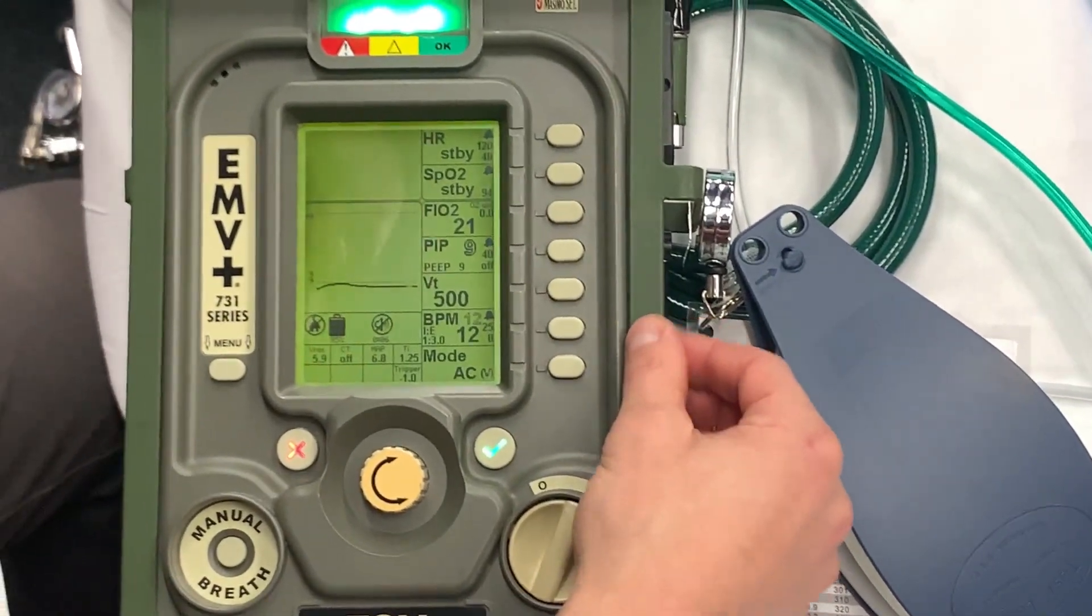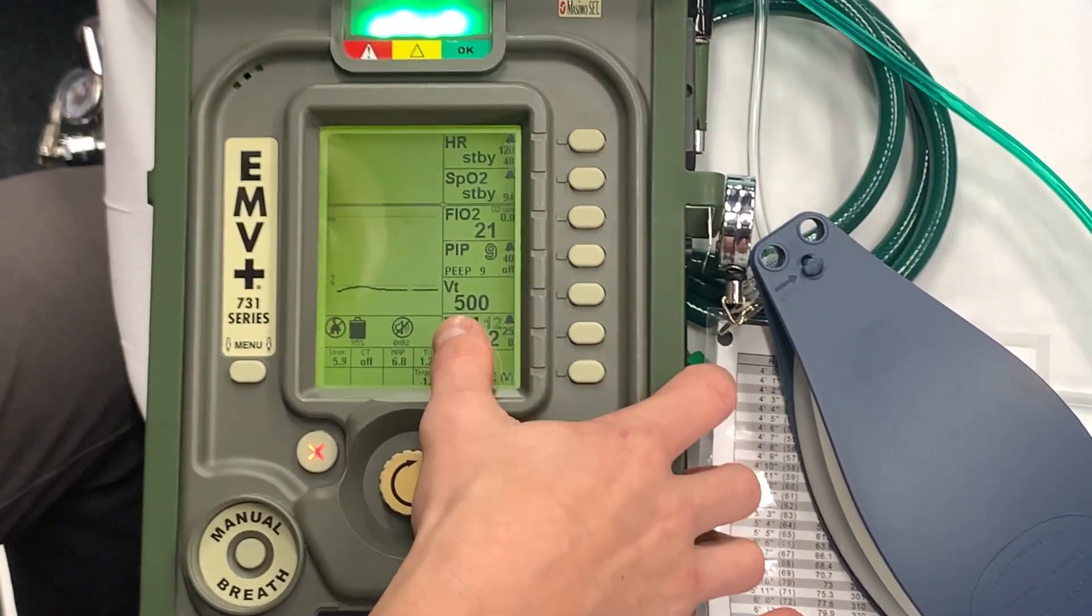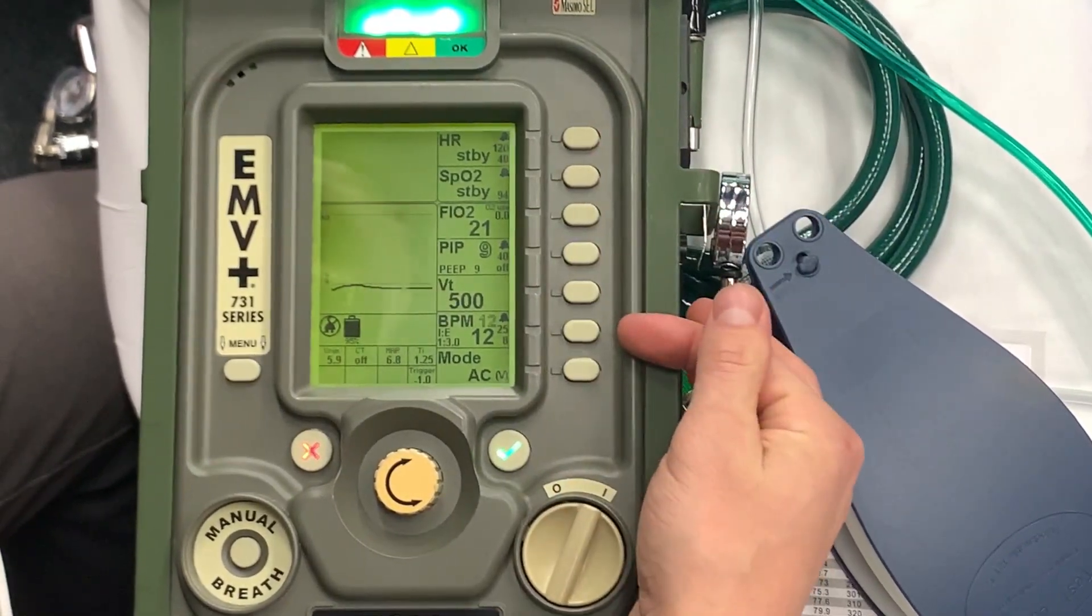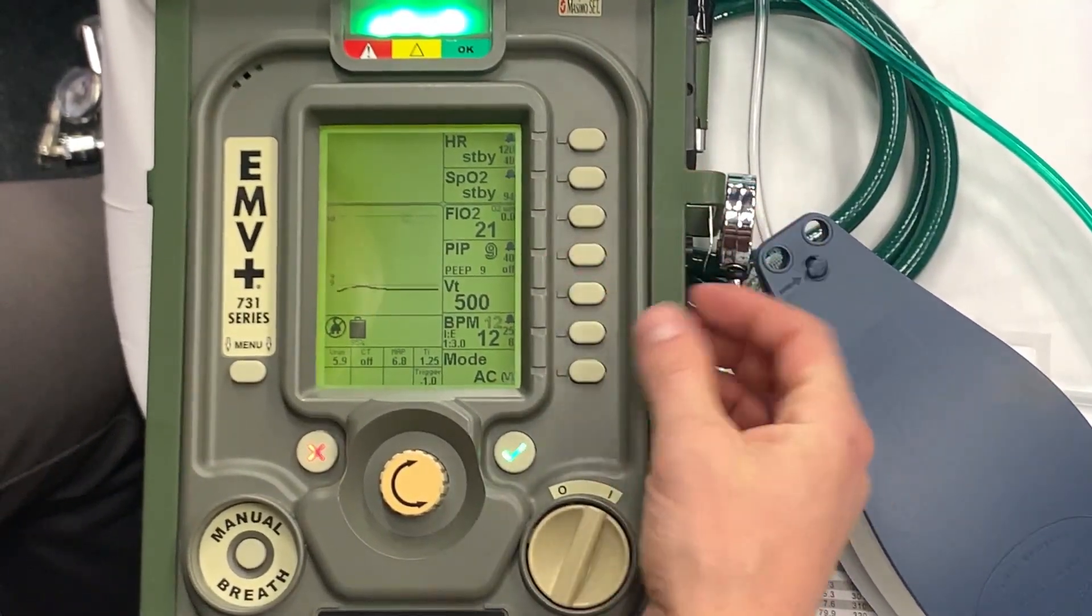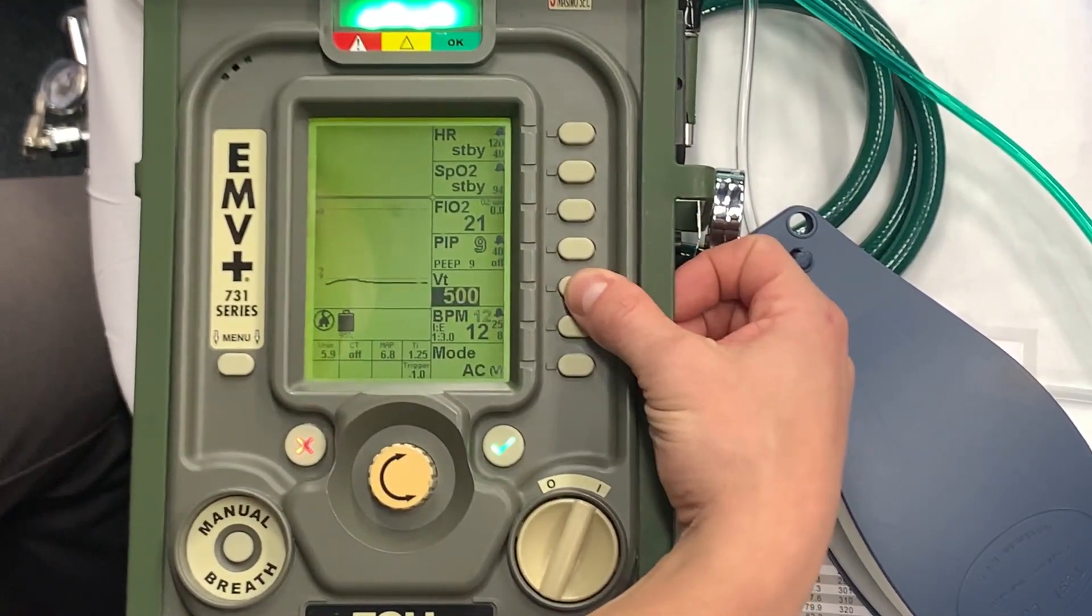So the place that I like to start at is I like to start with my tidal volume. And tidal volume is represented by VT. We can see that right there. If I want to choose any of these topics, we've got several soft keys next to here. The given choice is right to the right here. So if I want to change my tidal volume, press my soft key, it highlights.